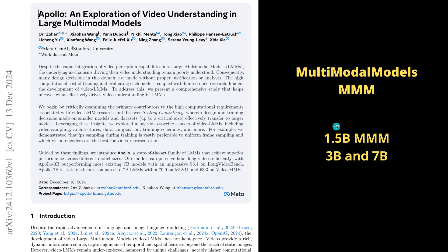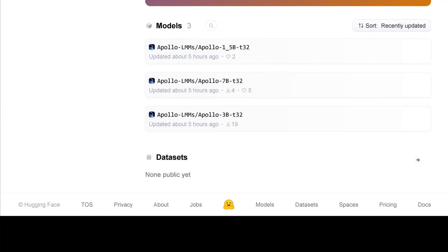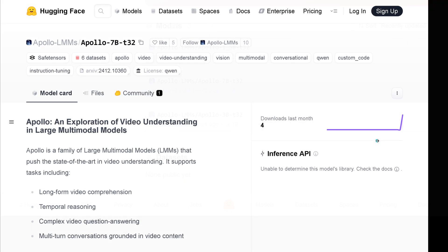The beauty is there's more: 1.5 billion trainable parameters, 3B and 7B. So this is exactly what I'm interested in — that I can run it maybe locally, maybe even train it locally. December 16, Apollo, and they have superior performance given here in the marketing material by Meta. I went to Hugging Face, and yes, there they are, just five hours ago: the Apollo 1.5B, the Apollo 7B, and the Apollo 3B.